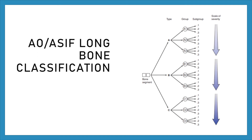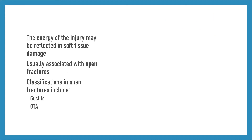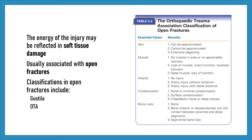The energy of the injury may be reflected in soft tissue damage, usually associated with open fractures. Classifications of open fractures include Gustilo and the Orthopedic Trauma Association (OTA).